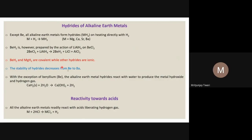Calcium hydride CaH₂, strontium hydride SrH₂, and barium hydride BaH₂ are ionic in character. The stability of these hydrides decreases from beryllium to barium — that is, stability decreases as we go down the group.